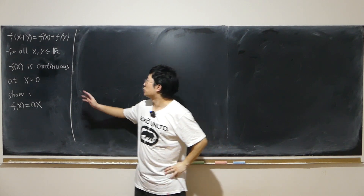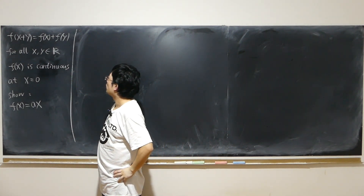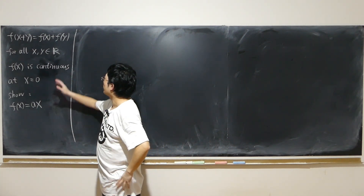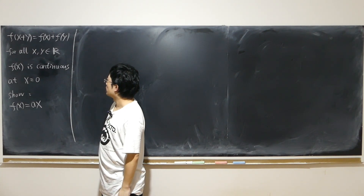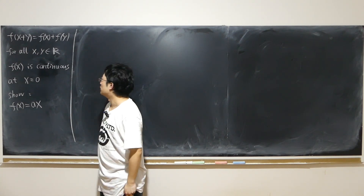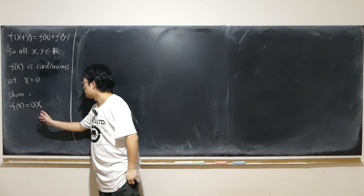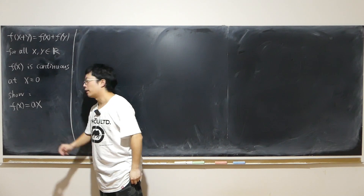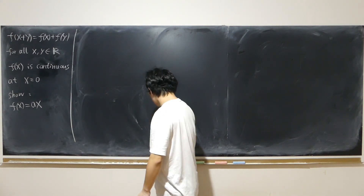f of x plus y is equal to f of x plus f of y for all x, y that are real numbers. And also f is continuous at x equal to 0. Show that f of x is equal to a times x.